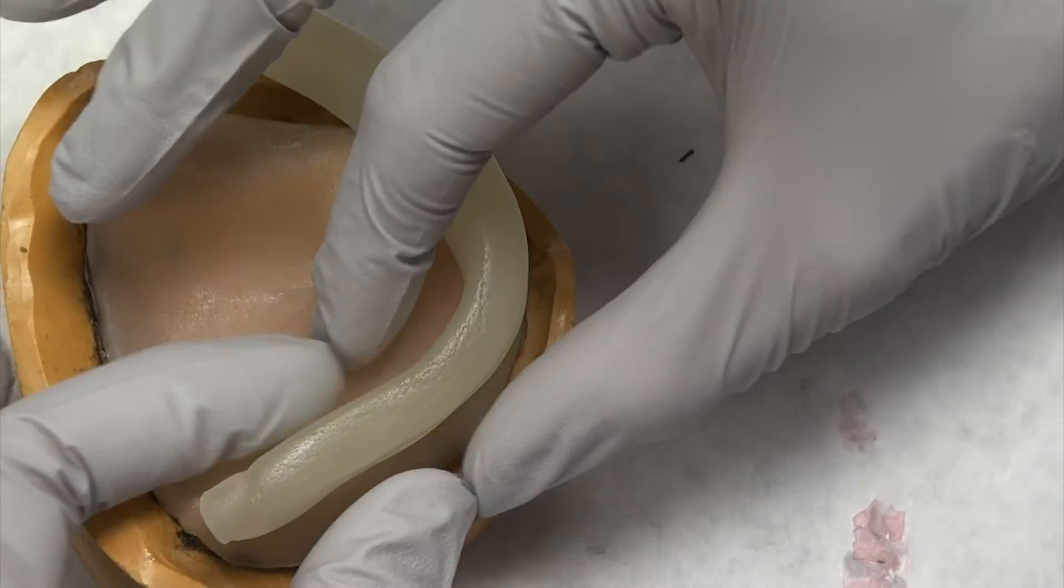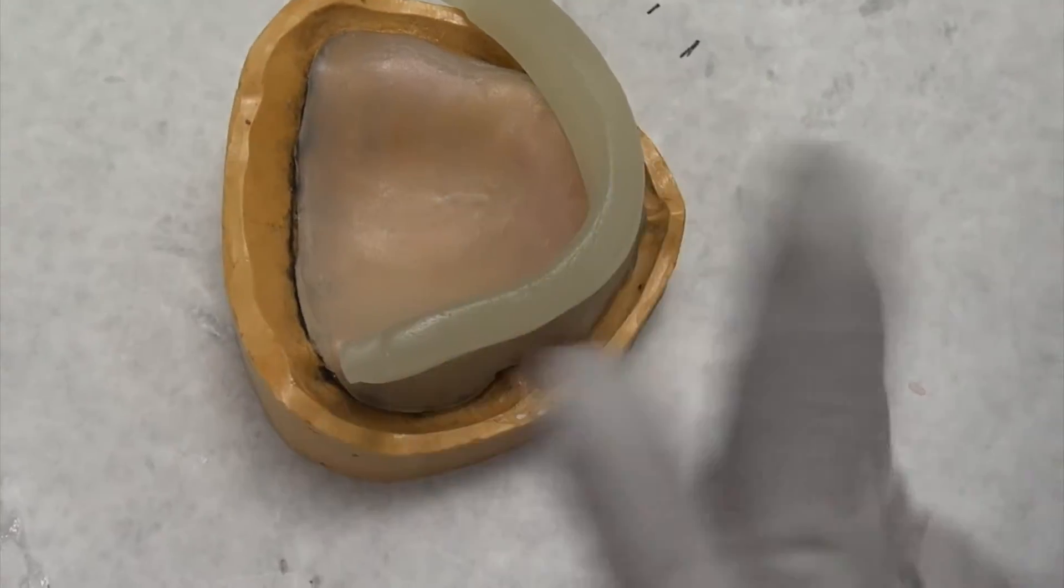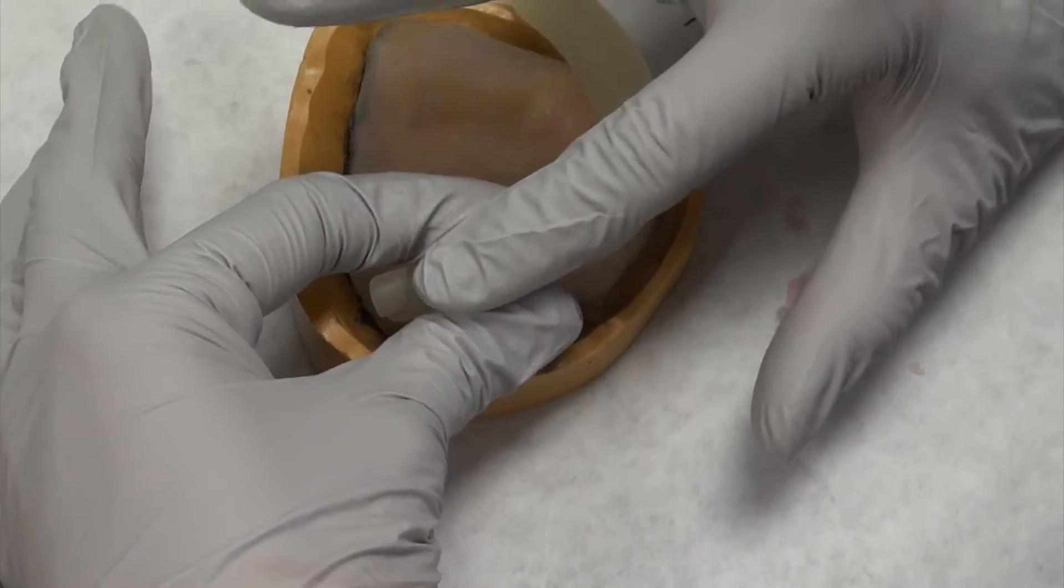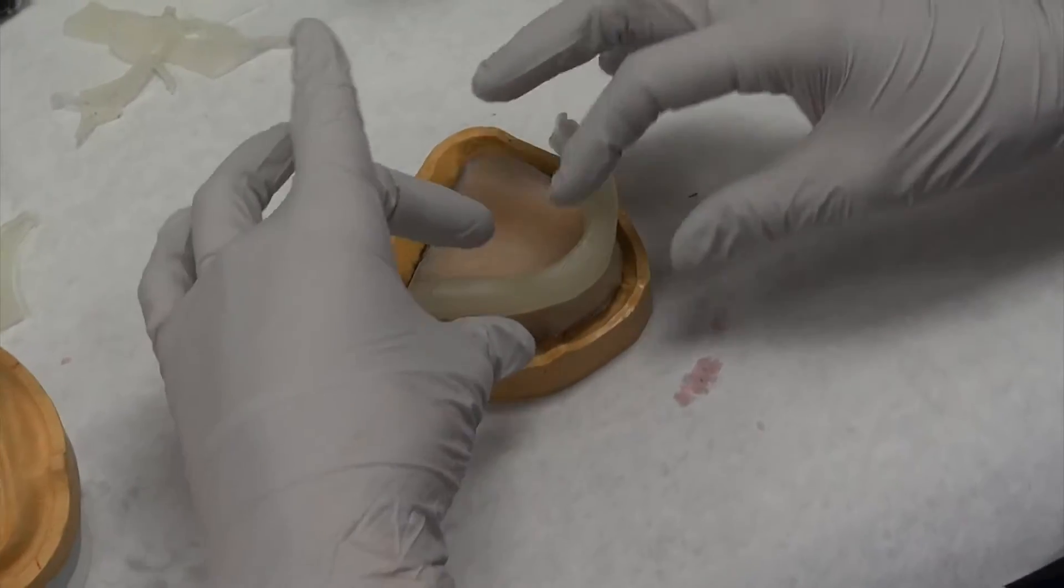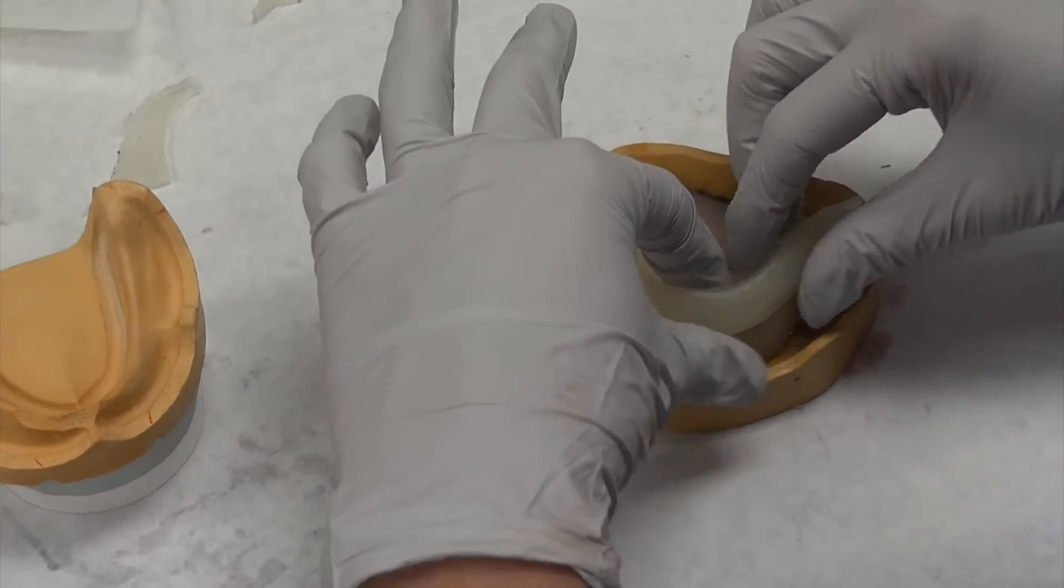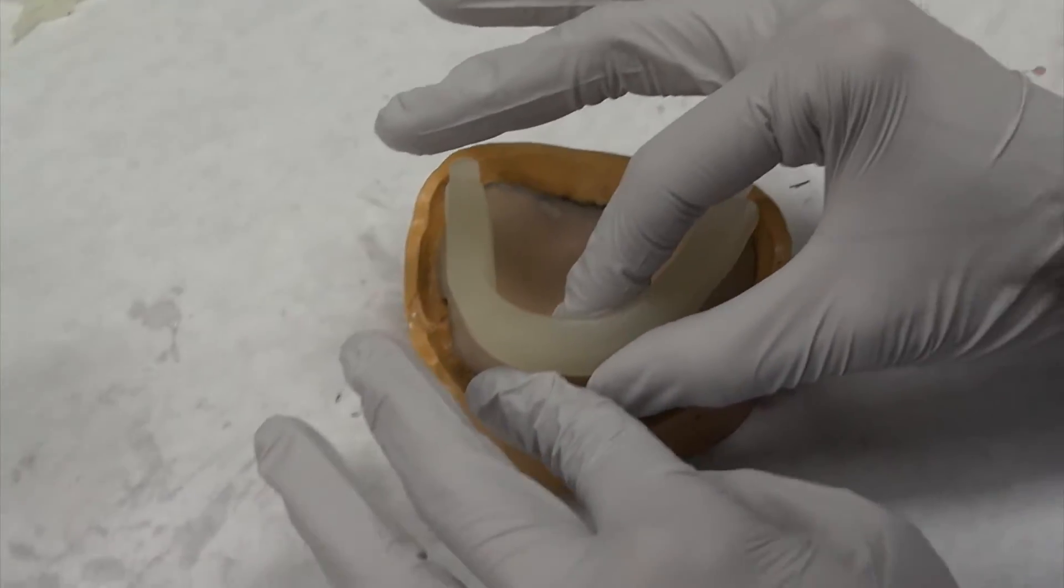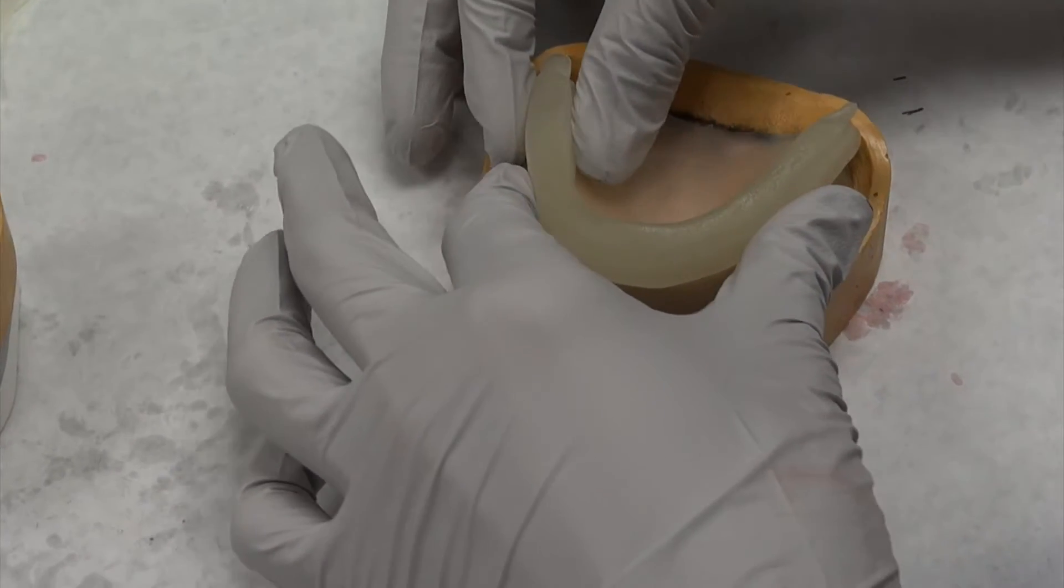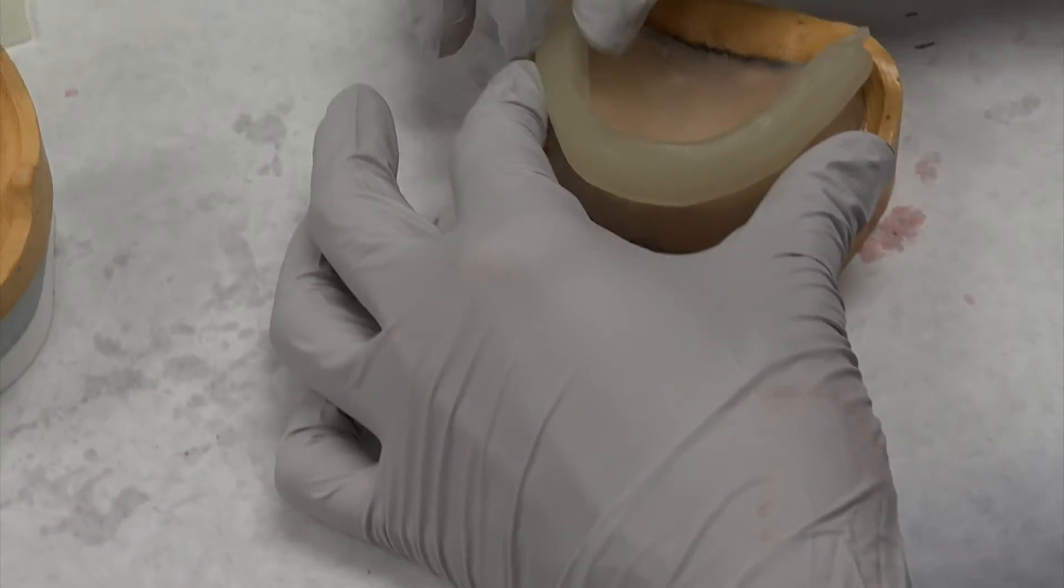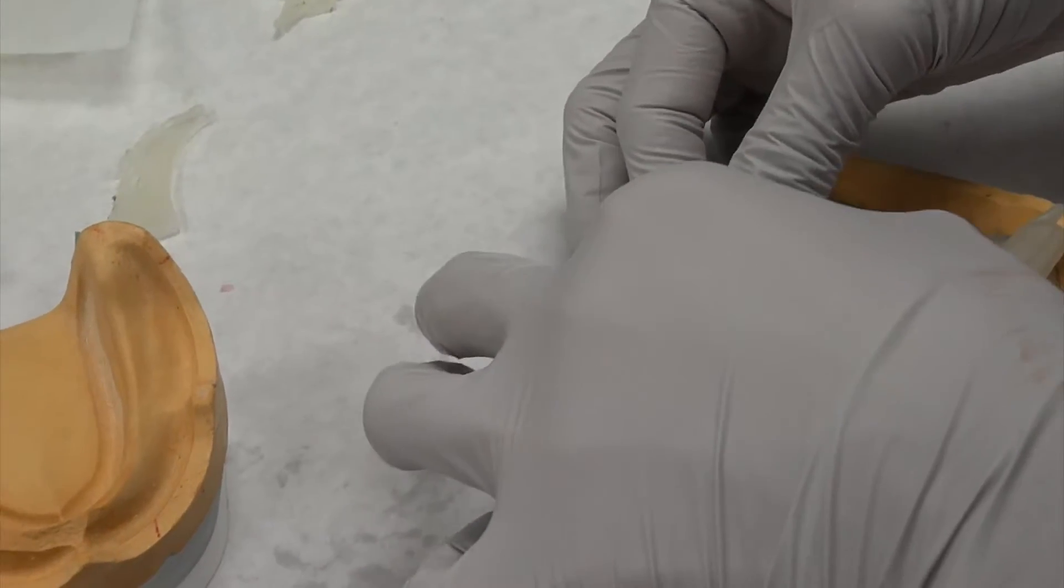Now the key here is that it has to be right dead on the center of the crest of the residual ridge. Any lingual, that's a deduction. Any buccal, another deduction. So it's going to be essential that you try to get it right on the crest without manipulating it any, or pushing it over to one side or the other.